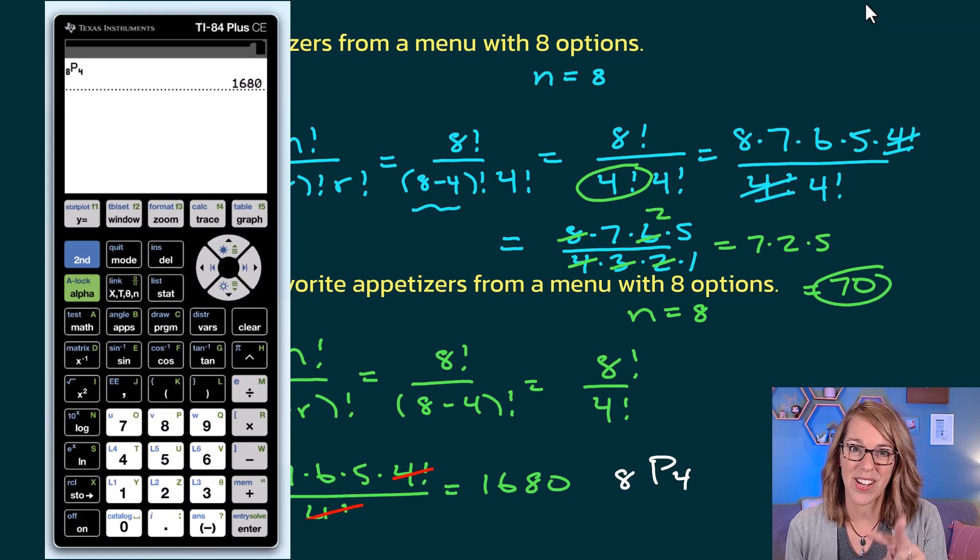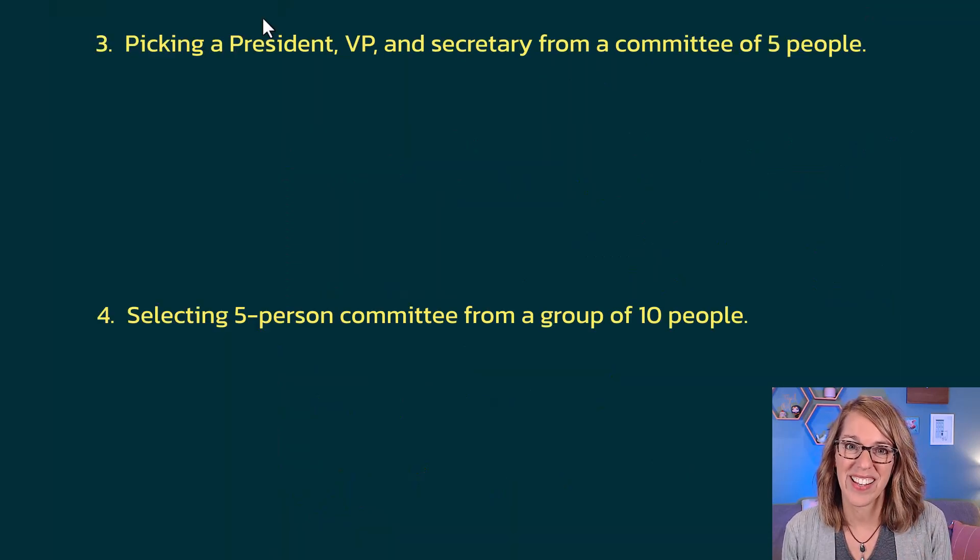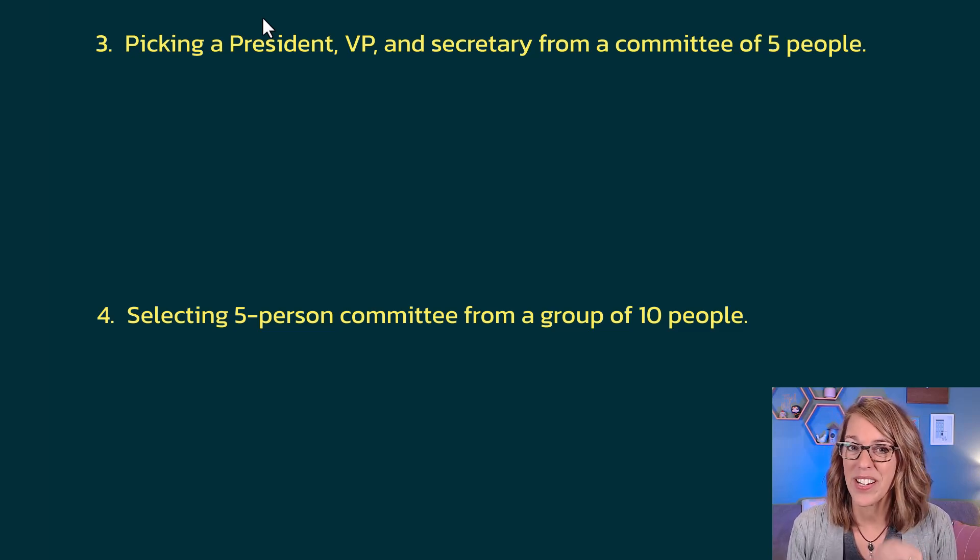I've got two more examples. See if you can decide which one's a combination and which one is a permutation. So for these two, take a minute and try and determine which one's a permutation and which one is a combination. If you want to get ahead of me even further, go ahead and put this into your calculator. Let's see if your answer will match mine.